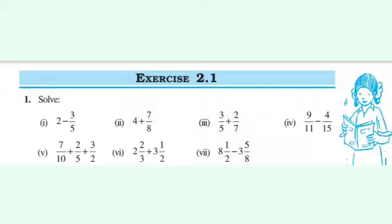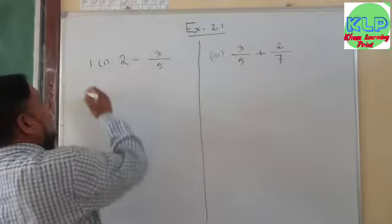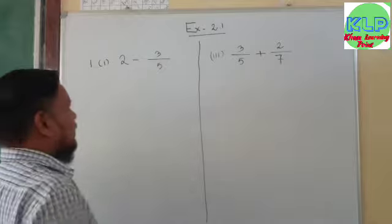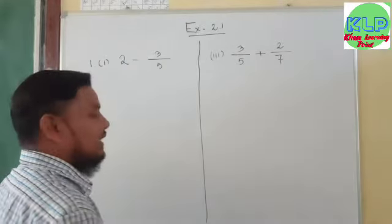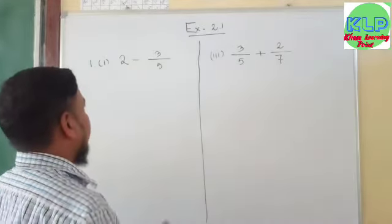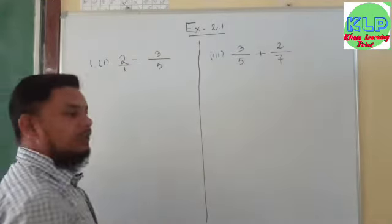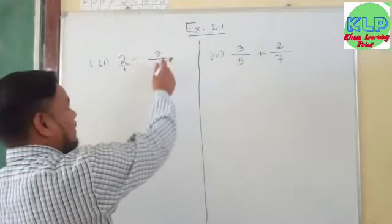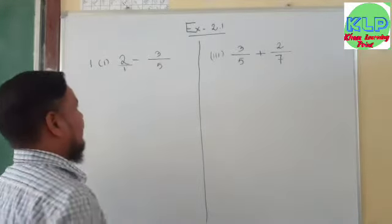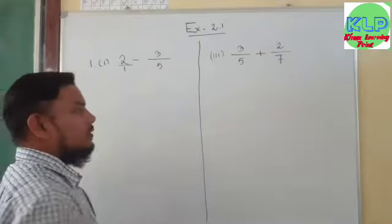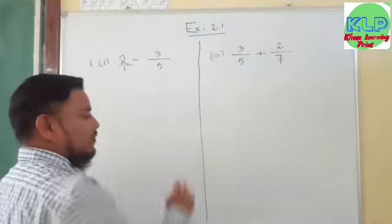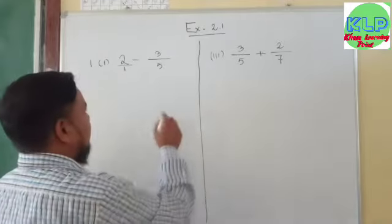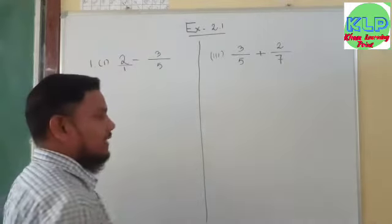Question number one, solve: the first one is 2 minus 3 upon 5. These two numbers — the first one is a whole number and the second one is a fractional number. The whole number has denominator 1, and the fractional number 3 upon 5 has denominator 5. We need to make both denominators the same. What is the LCM of 1 and 5? The LCM of 1 and 5 is 5.